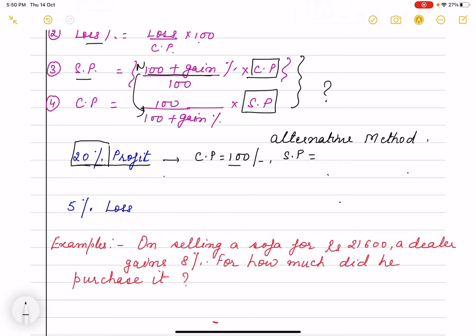So if I have a profit of 20 rupees, my CP is 100 plus 20 that is 120 rupees.